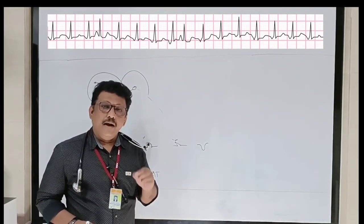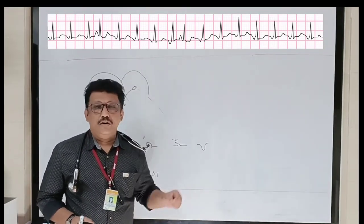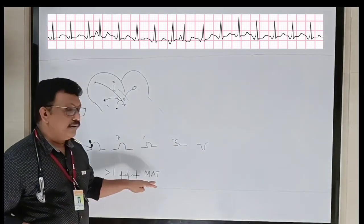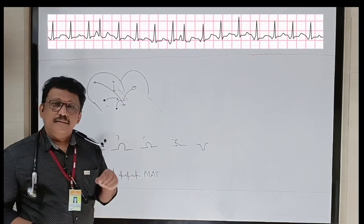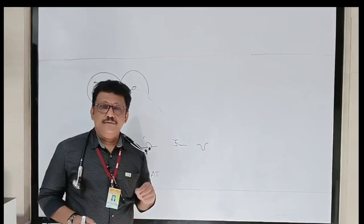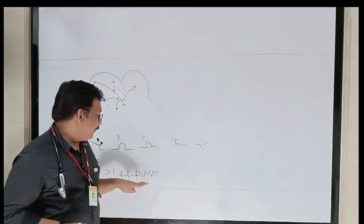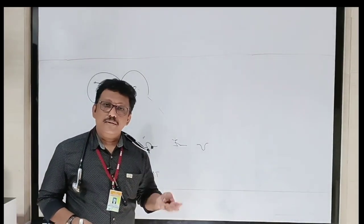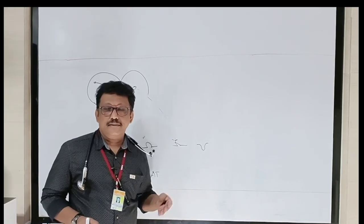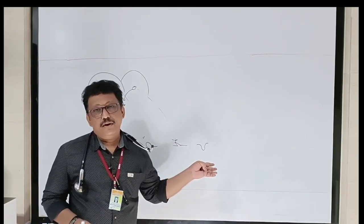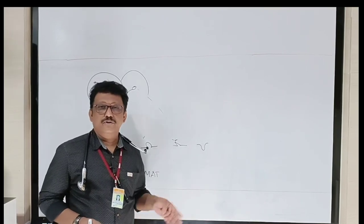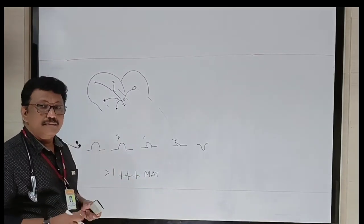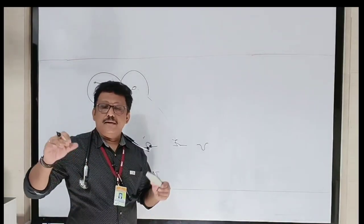Multifocal atrial tachycardia means a large number of abnormal P waves are seen in the rhythm strip — maybe more than three or four — with heart rate more than 100. First you have to see whether the patient is having hypoxemia due to any cause like COPD or ILD — that is a common cause for MAT. That should be treated with oxygen. To control the rate, diltiazem or verapamil can be used; beta blockers may be avoided in COPD or asthma.